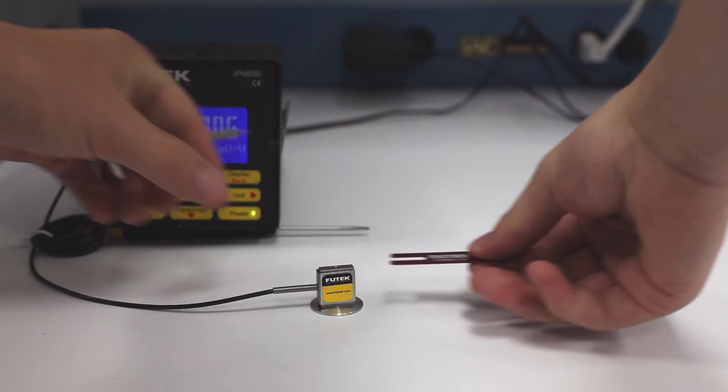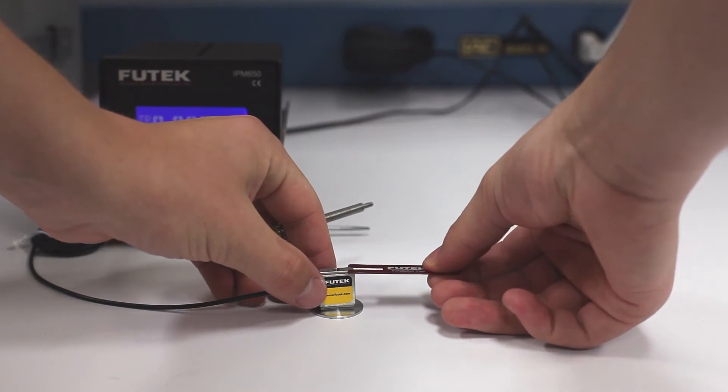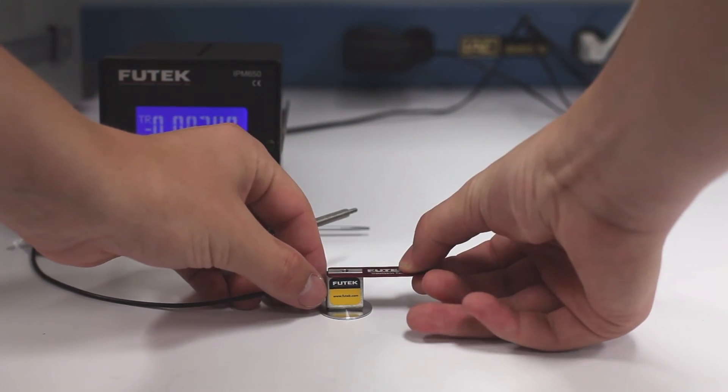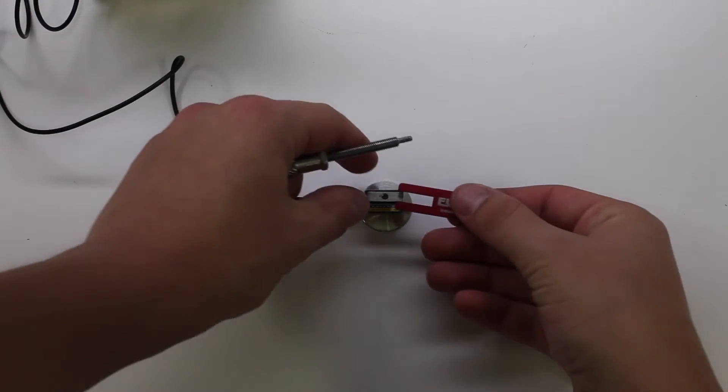Slide the tool into the sensor so that the loading surface perfectly fills the gap in the tool. There should be no room for the sensor to move.